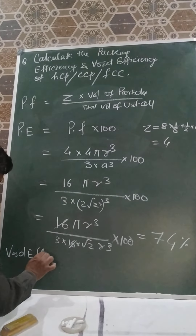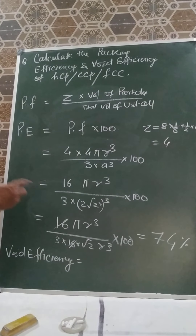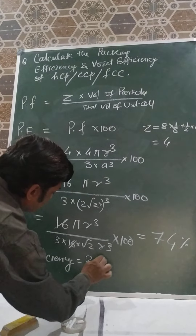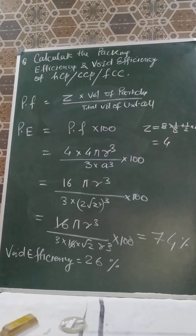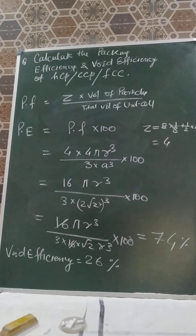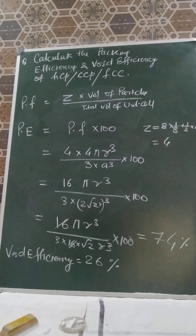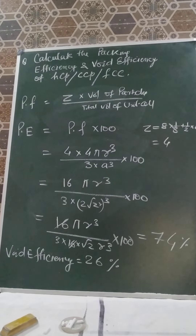Void efficiency is equal to 100 minus 74, which equals 26 percent. To summarize: for FCC or CCP or HCP, packing fraction Z into volume of particles divided by total volume of unit cell gives packing efficiency of 74 percent, and void efficiency of 26 percent.